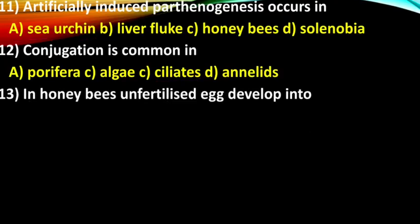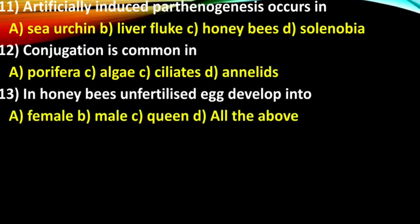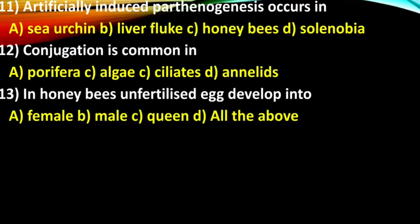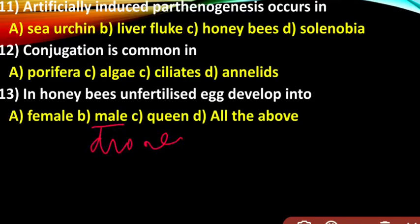Question 13: In honeybees, an unfertilized egg develops into — option A: female, B: male, C: queen, D: all of these. The right answer is male, also called drones.